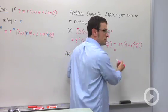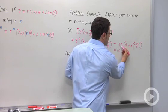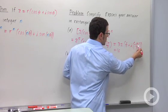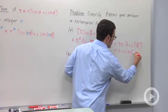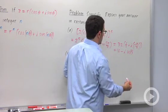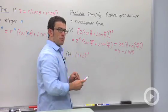So this is 32 times 1 half, or 16. And then 32 divided by 2, 16 root 3. So minus i times 16 root 3. This is the rectangular form of this complex number to the fifth power.